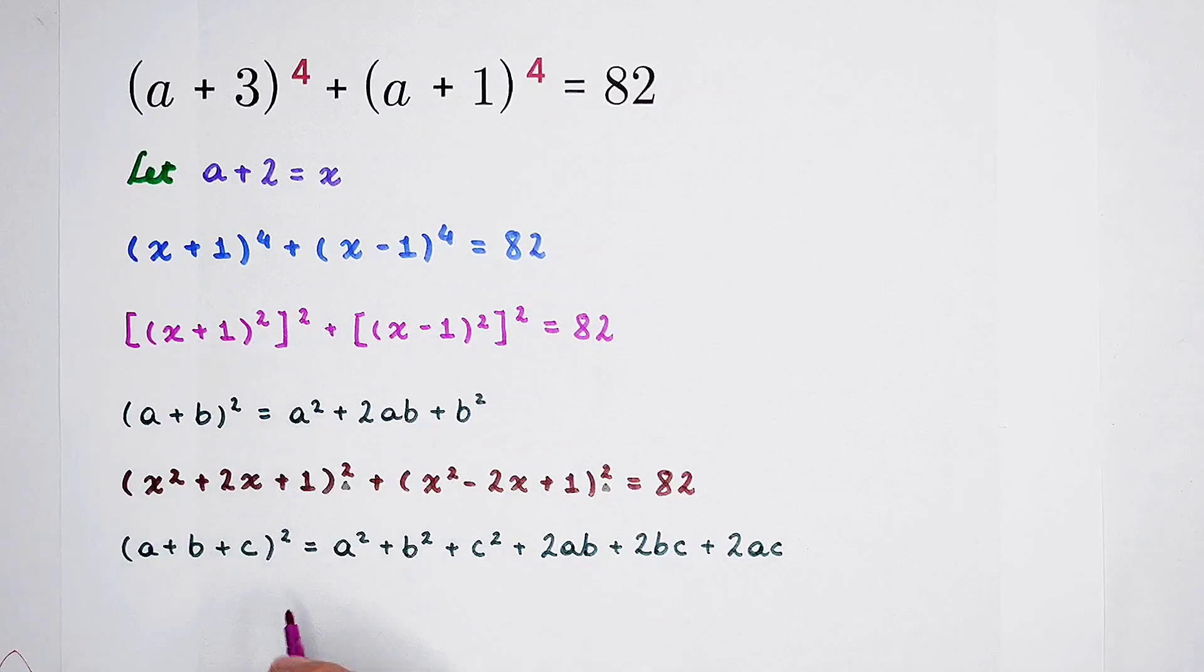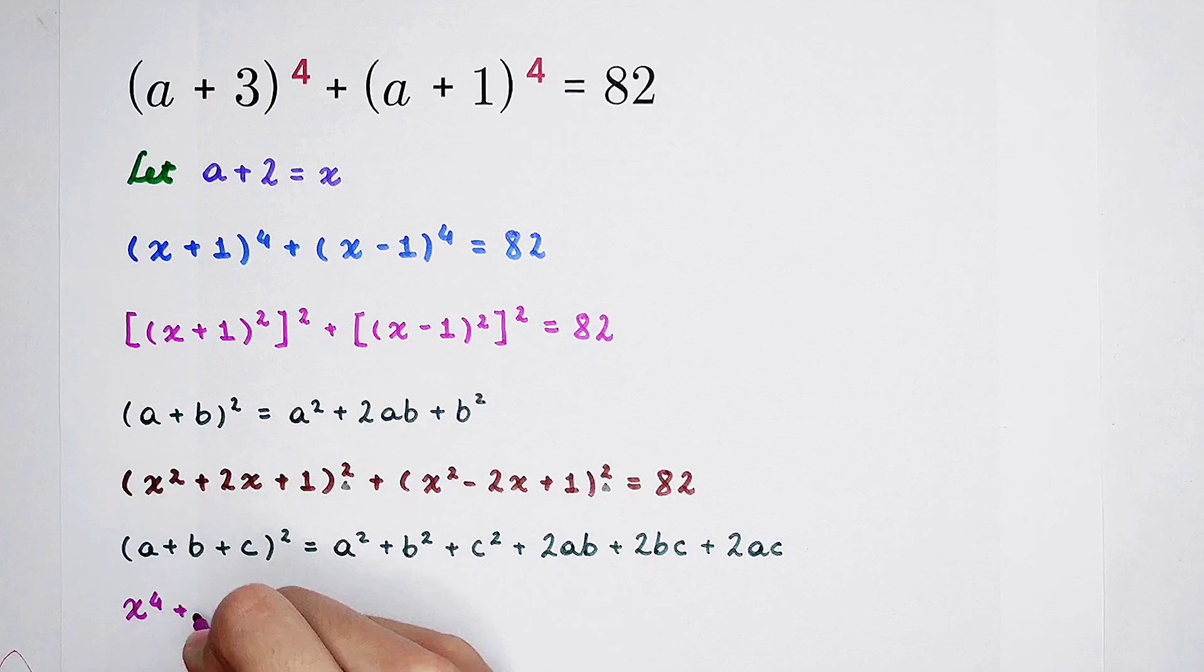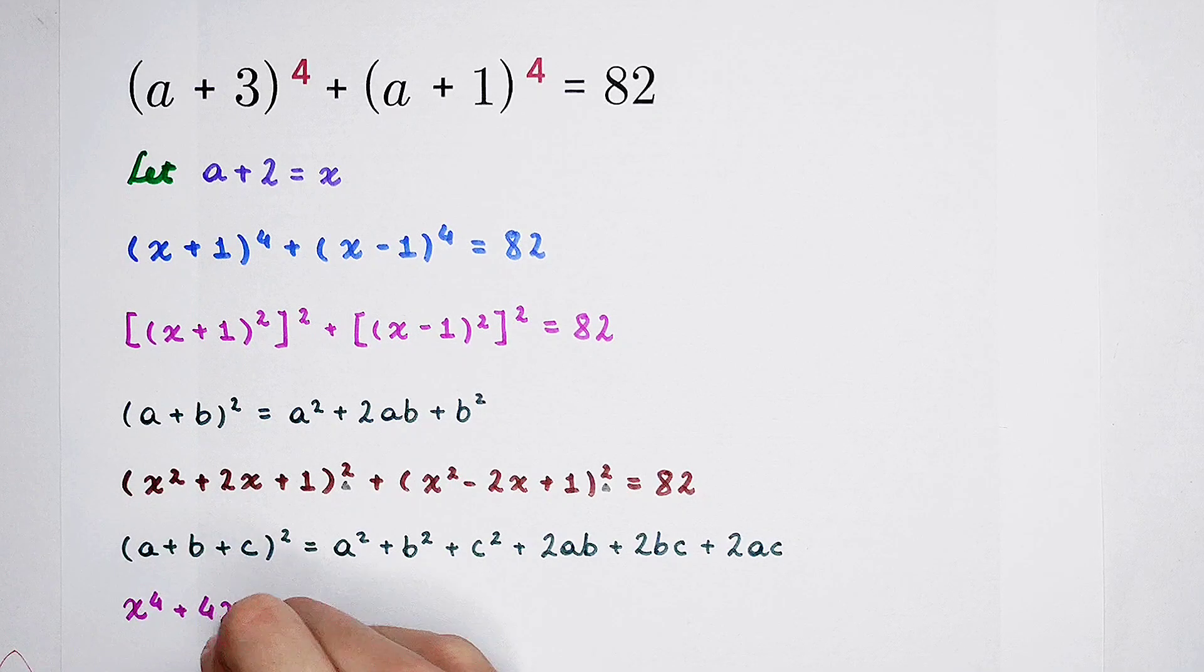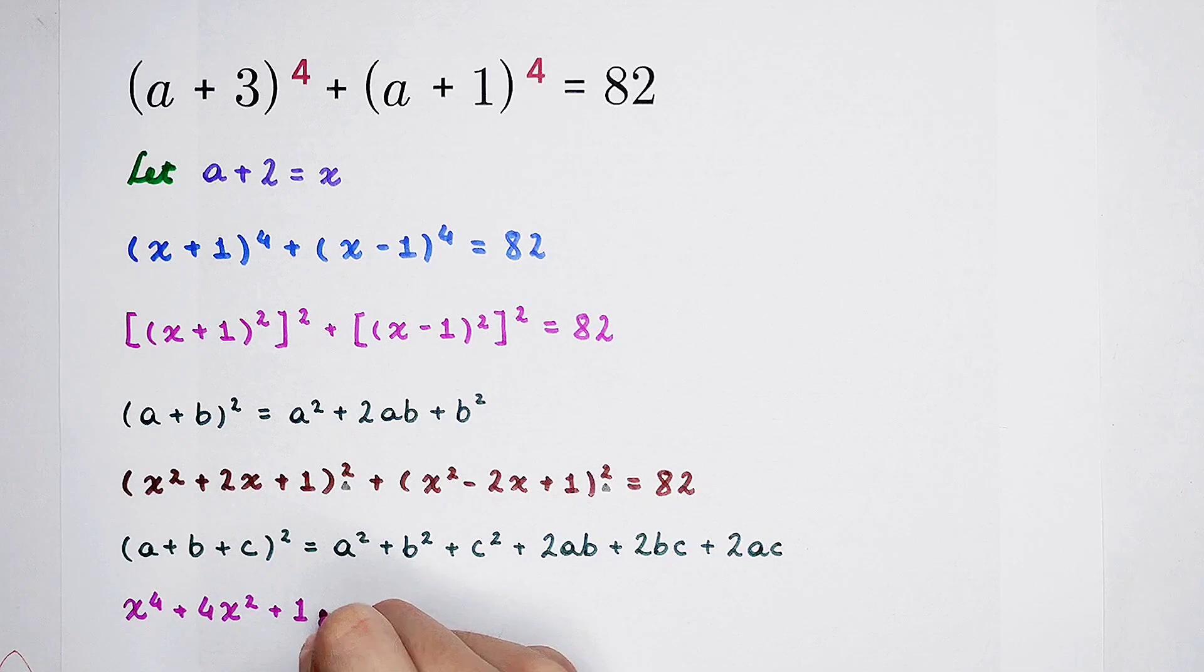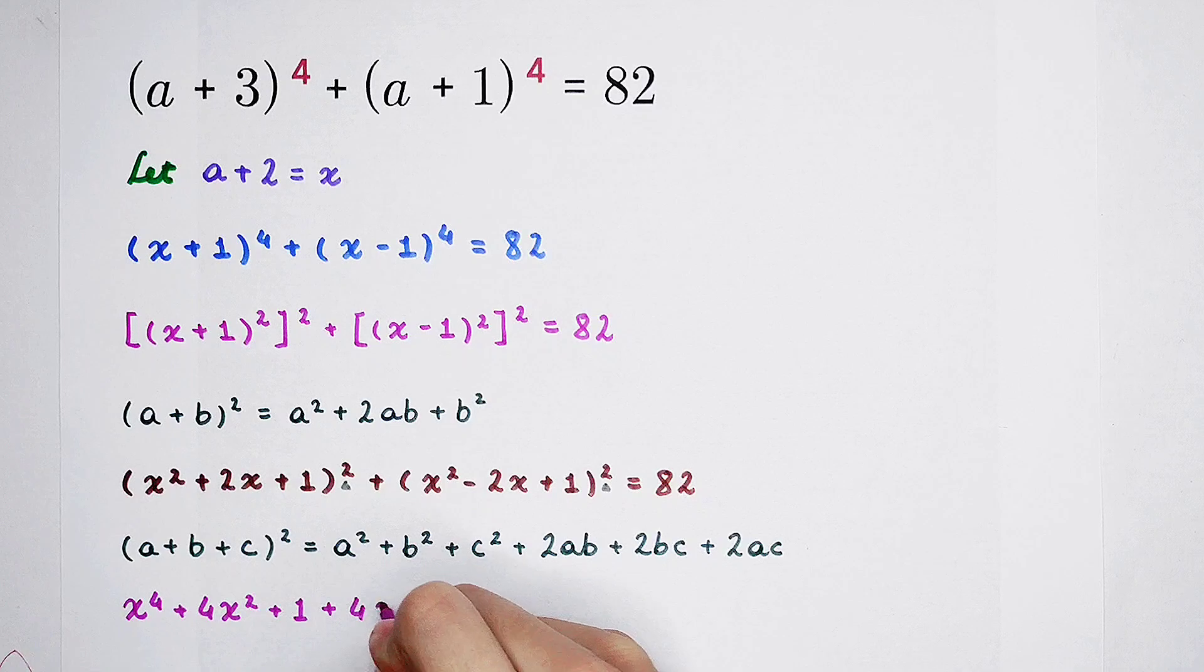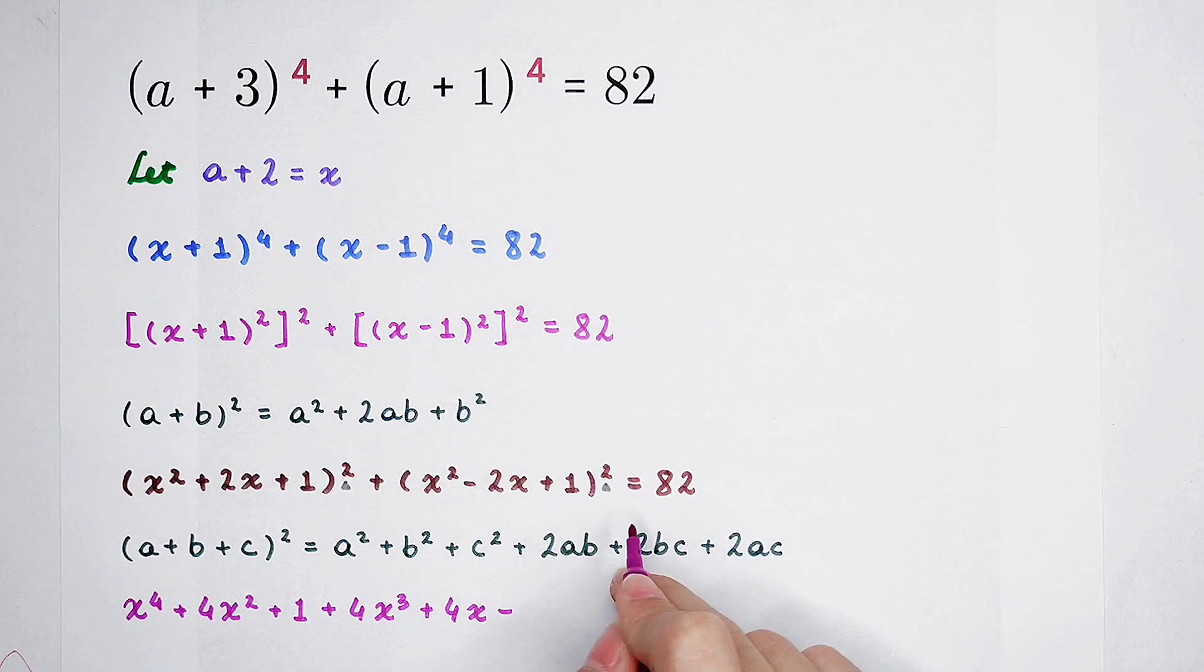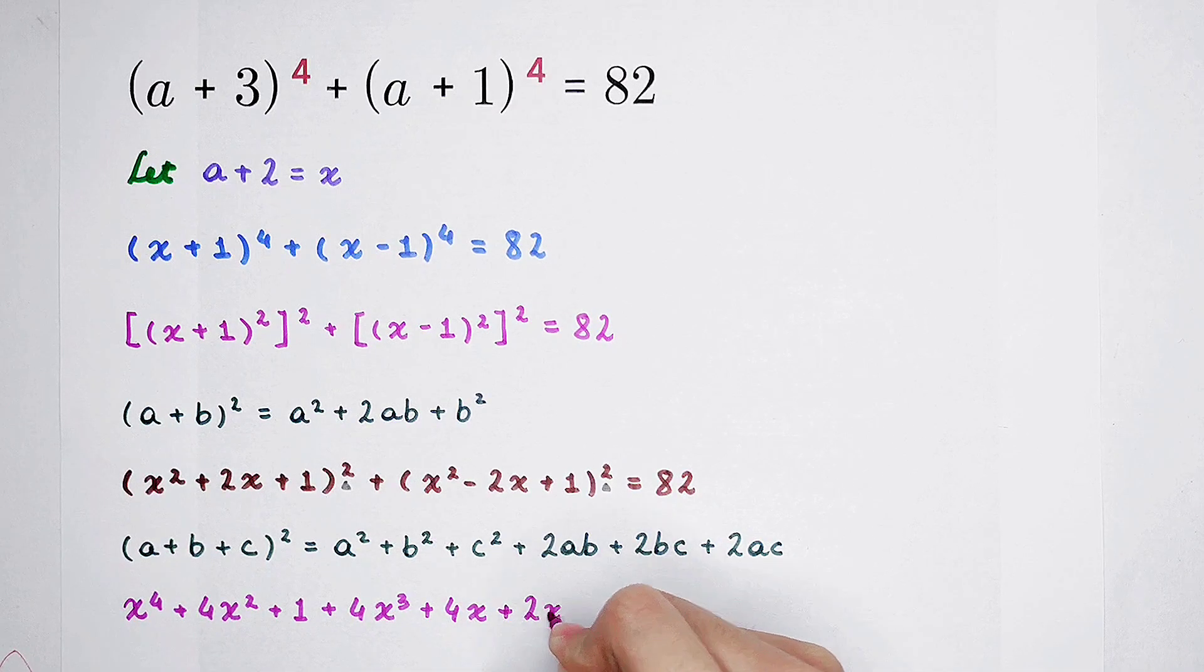x squared all squared is x to the power 4. And then 2x all squared is 4x squared. And then plus 1. And then 2AB is 4 times x cubed. 2BC is 4x. And then 2AC is plus 2x squared.